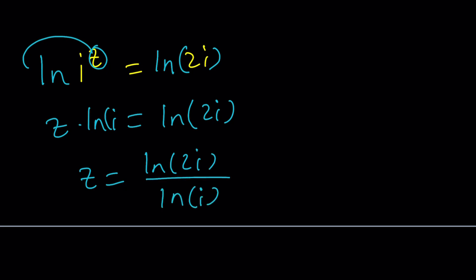z can be written as ln 2i divided by ln i. Just like with the real version, remember, we got ln 2x over ln x or log 2x over log x. Same idea, just replace x with i and you'll get the same result.